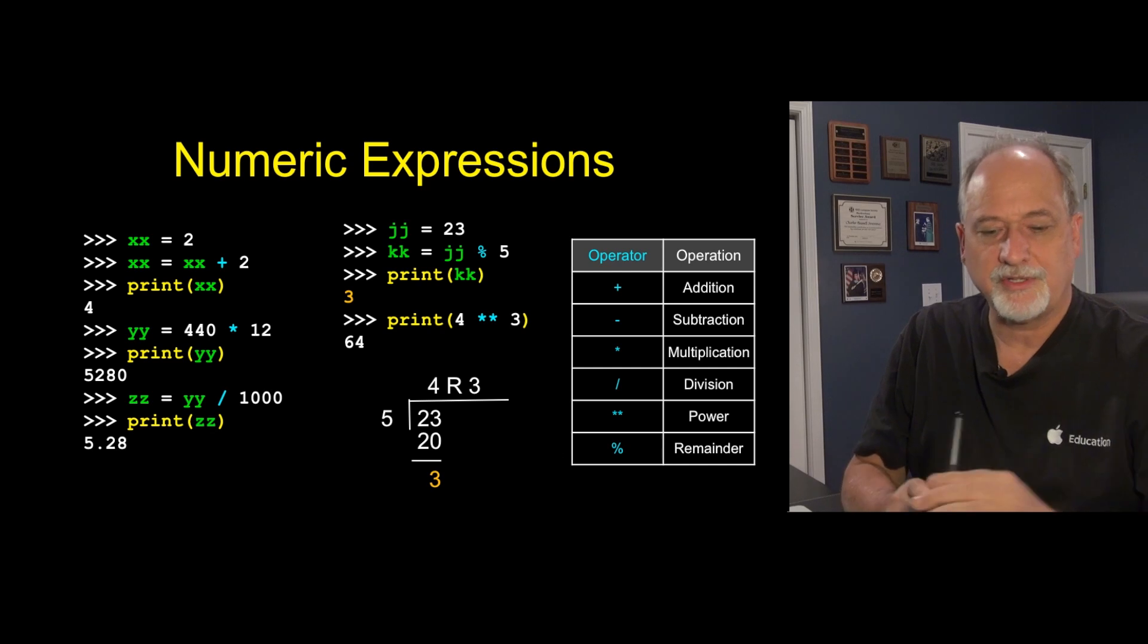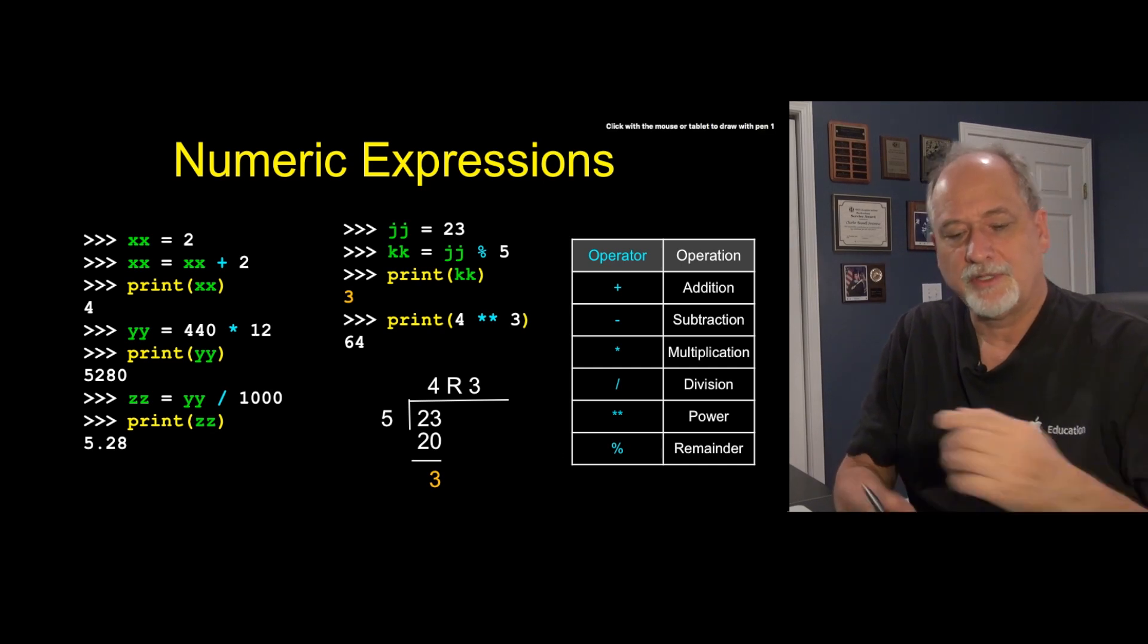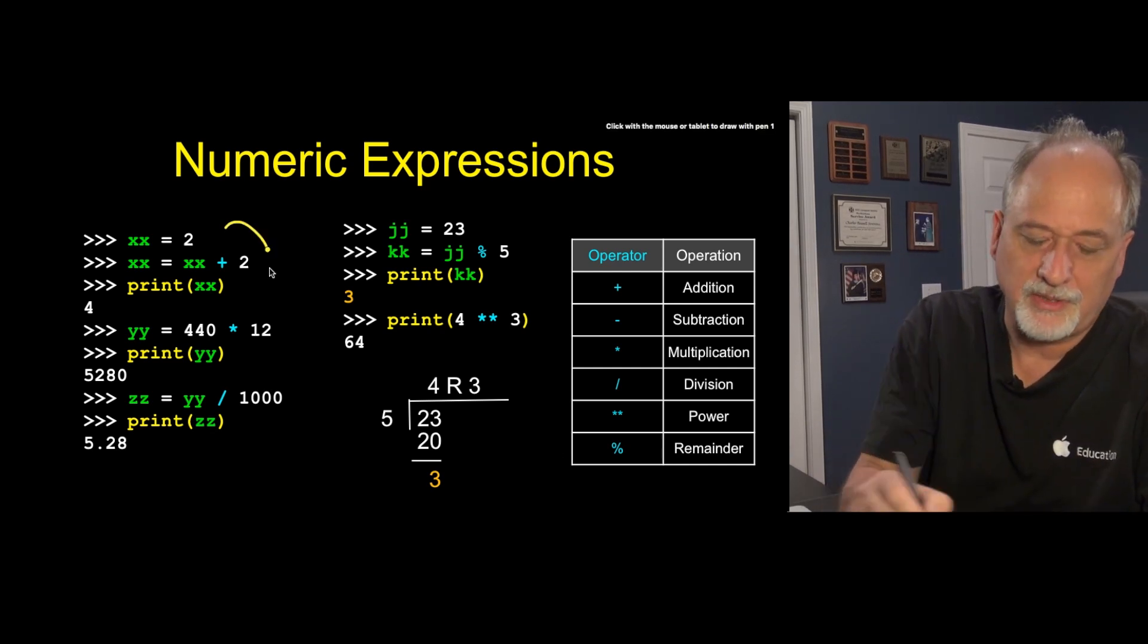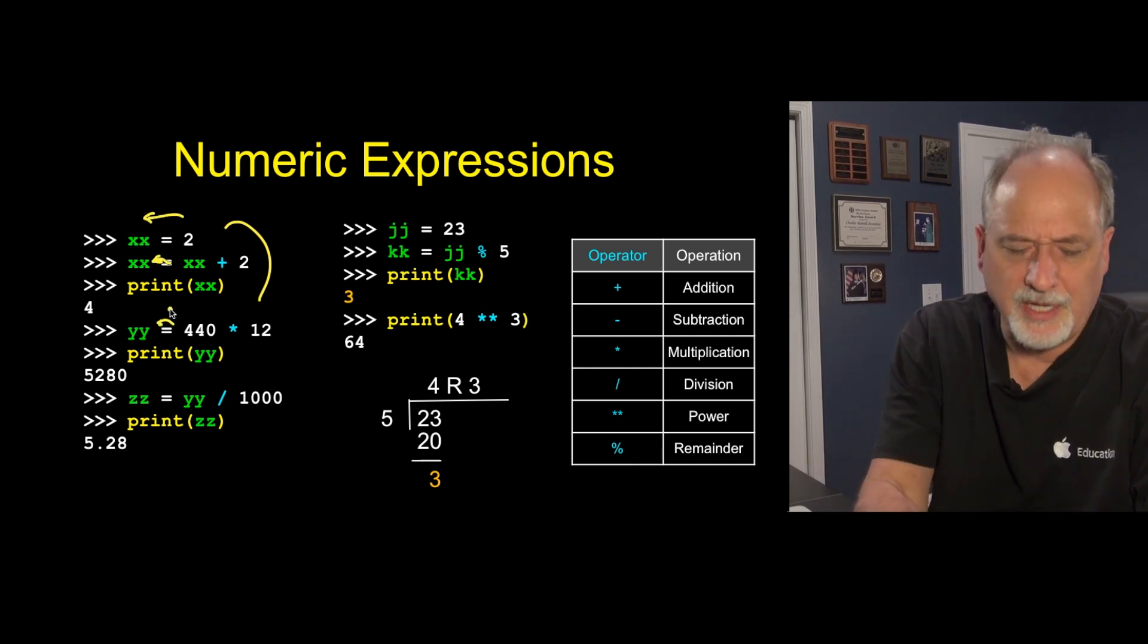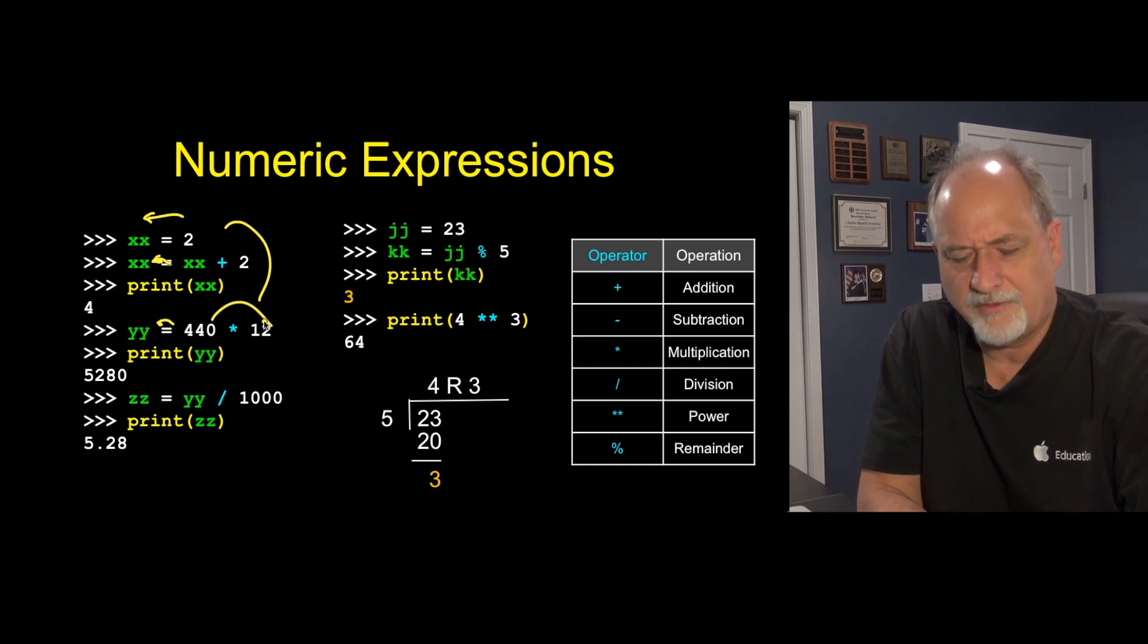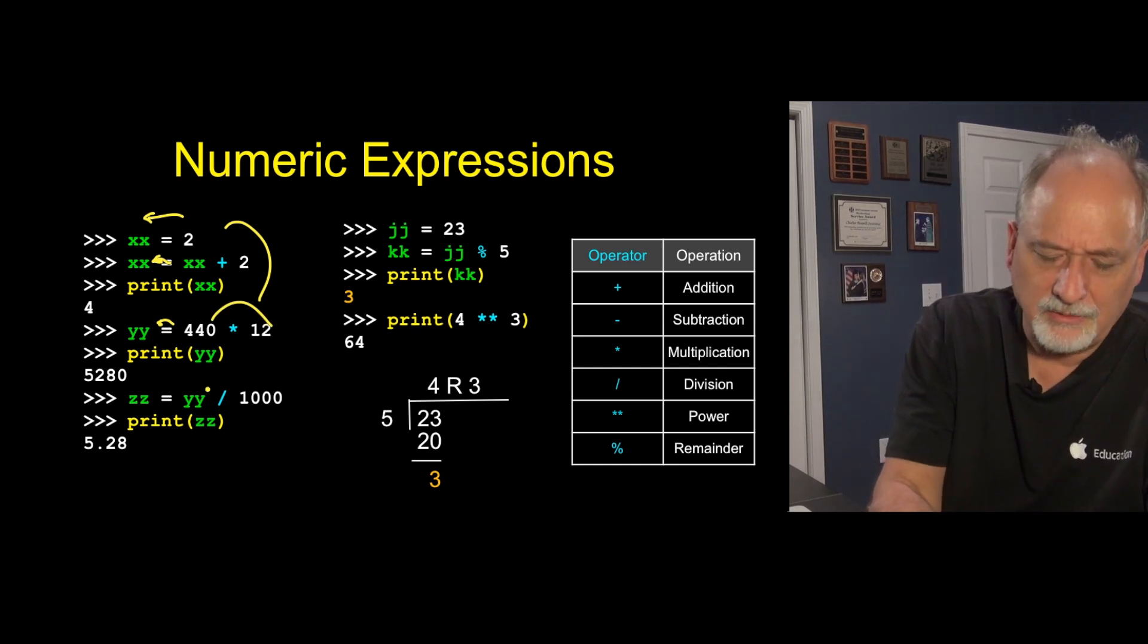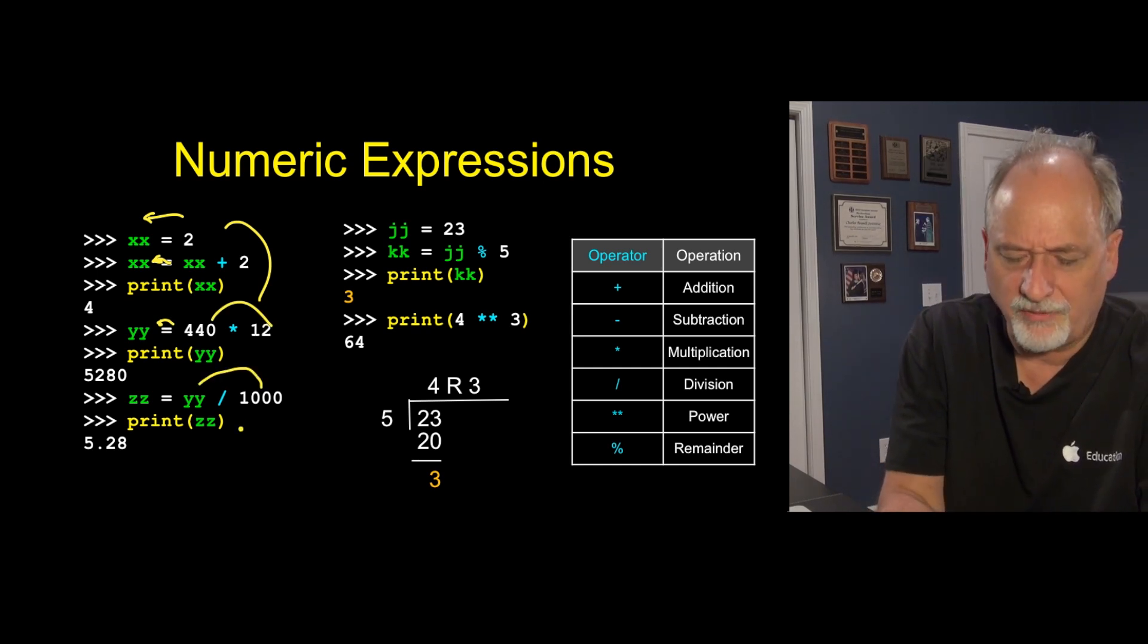So here's a whole series of little examples of this. We've already seen the plus. X equals X plus one. Keep remembering that these assignments are arrows, basically. They have a direction. Multiplication, 440 times 12. Dividing by 1,000. Here we're going to put 23 into JJ, and then we're going to do modulo. So that says take 23, divide it by 5, and give me back the remainder, and put it in KK.